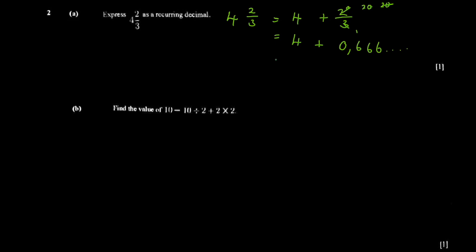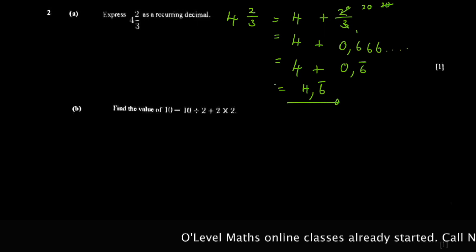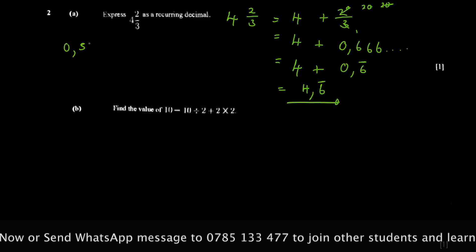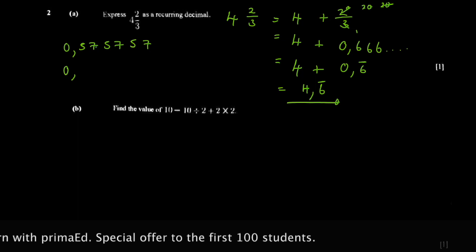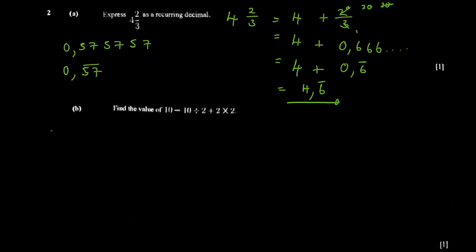The repeating digit is six, so you write it with an overbar to show it keeps going. That gives four plus 0.6̄, which equals 4.6̄. For trickier cases — say you get 0.575757... — you identify the digits that are repeating. Here five-seven is repeating, so you put an overbar over 57. That's how you express numbers as recurring decimals.